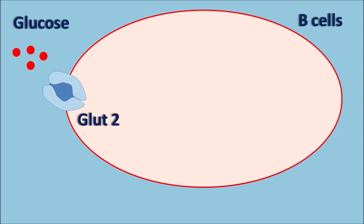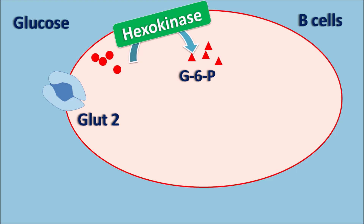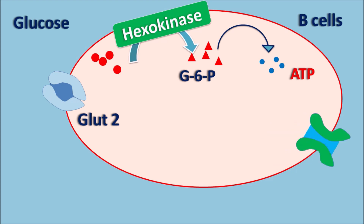In pancreatic beta cells, glucose is taken up through GLUT2 receptors. Once inside, glucose is phosphorylated to glucose-6-phosphate by the enzyme hexokinase. After phosphorylation, glucose is activated and glucose-6-phosphate undergoes oxidation — just like glycolysis — releasing ATP molecules. When plasma glucose levels are excessively increased, more glucose is taken up into beta cells, producing more ATP, resulting in increased intracellular ATP levels.